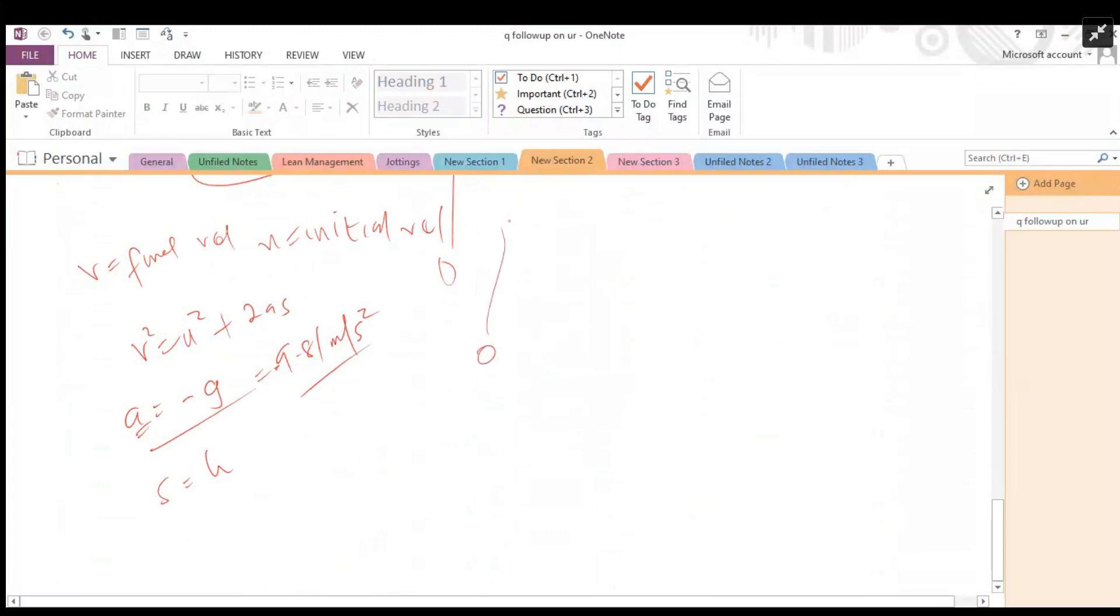Now in this case, when the bullet leaves the gun and reaches the maximum height, final velocity becomes zero. So we have to look for the initial velocity. So 0² = u². Recall that acceleration due to gravity is going to be negative because it's going against gravity, so that would be -9.81.